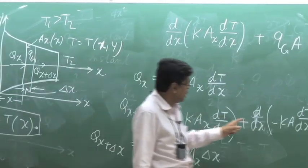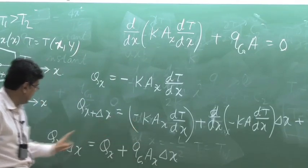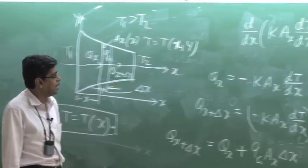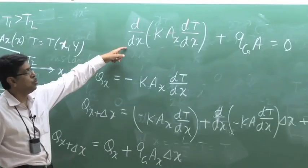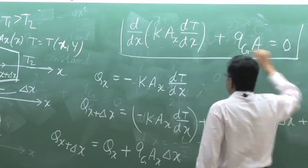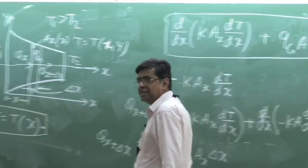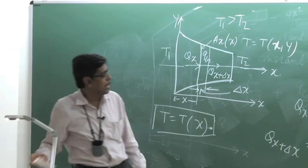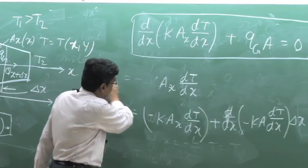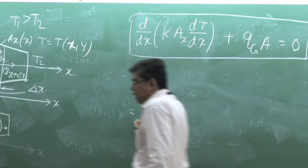After writing the energy balance and cancelling Q_x from both sides, Q_g·A(x)·δx remains, and by substituting the Taylor expansion you obtain the governing equation. So our starting point, even when area and thermal conductivity vary, is: d/dx of (K·A(x)·dT/dx) + Q_g·A(x) = 0. In a special case where Q_g = 0 — that is, no heat generation — this becomes d/dx of (K·A(x)·dT/dx) = 0.